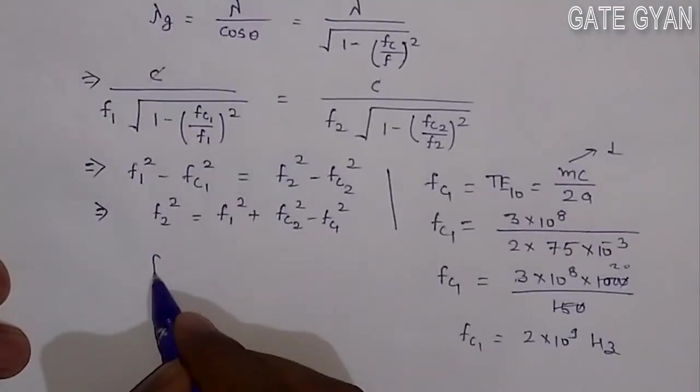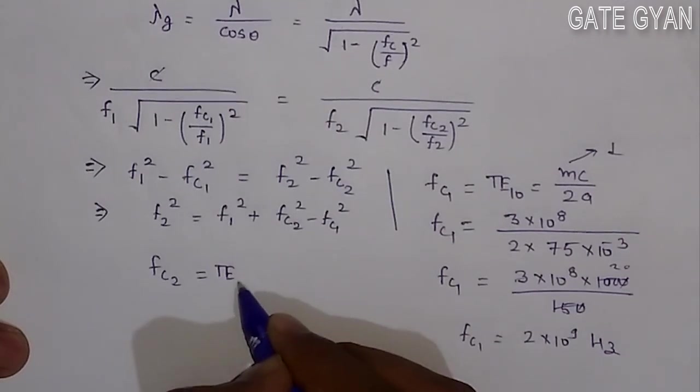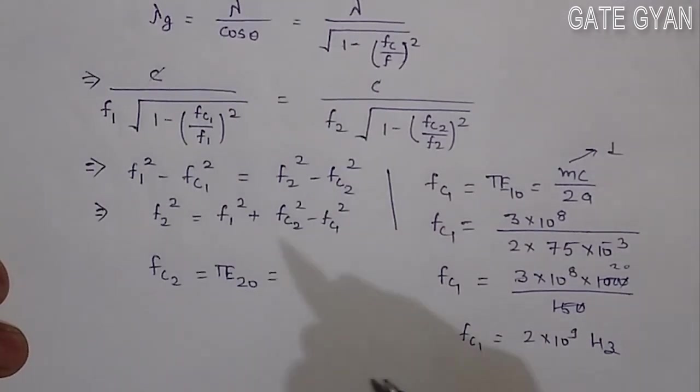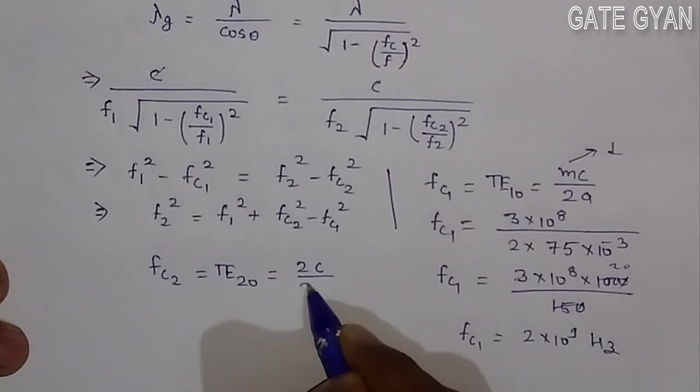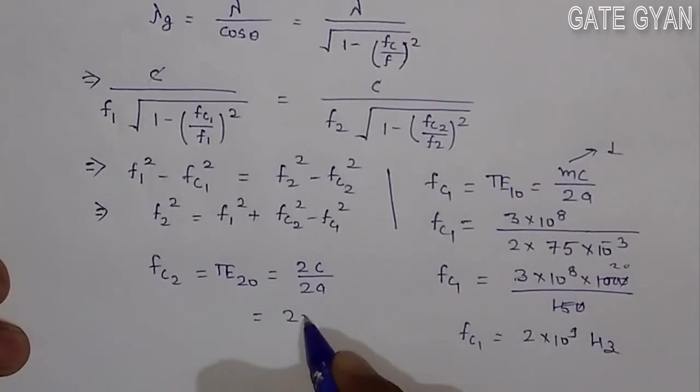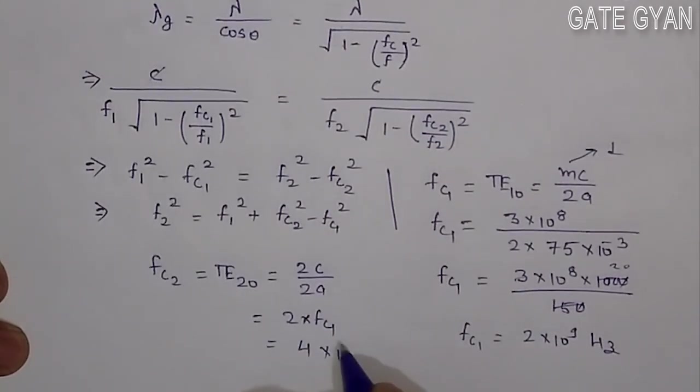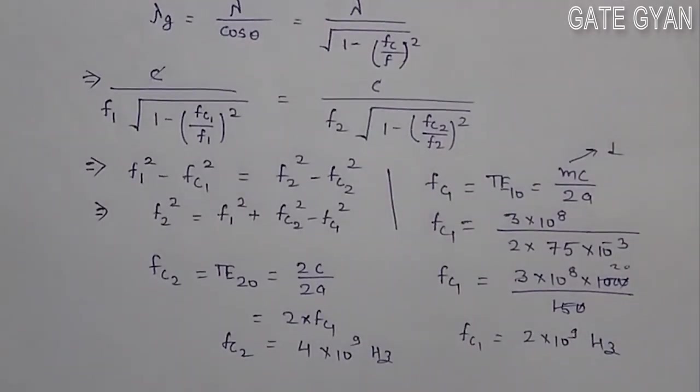If you solve FC2, the cutoff frequency for TE20 mode, this will be 2C divided by 2A. The M value is 2, so it is nothing but 2 times of FC1. If you solve it, you will find it's 4 into 10 to power 9 hertz. So you have got both FC2 and FC1.